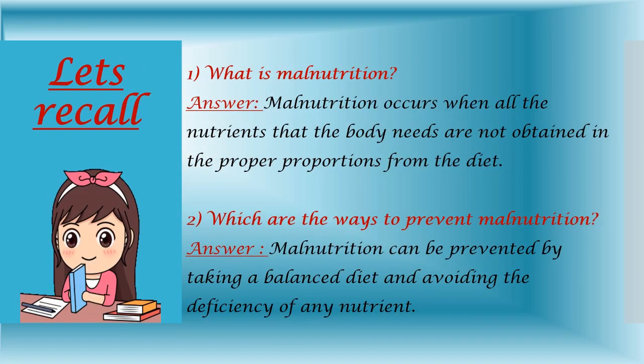Students, let us recall what we have studied in 6th Standard. Tell me, what is malnutrition? Malnutrition occurs when all the nutrients that the body needs are not obtained in the proper proportions from the diet.